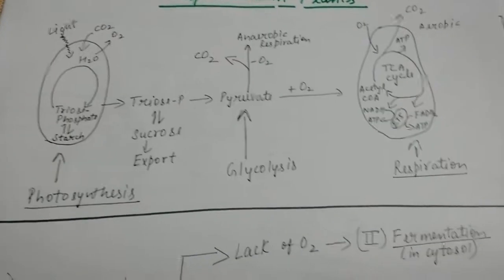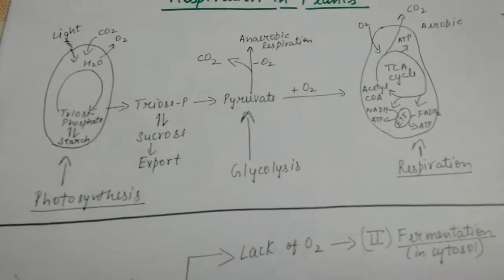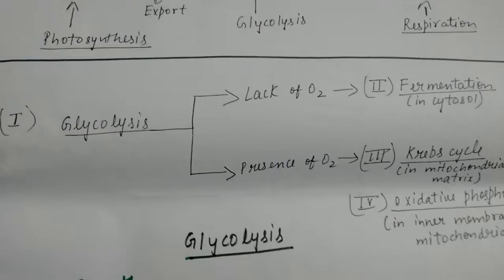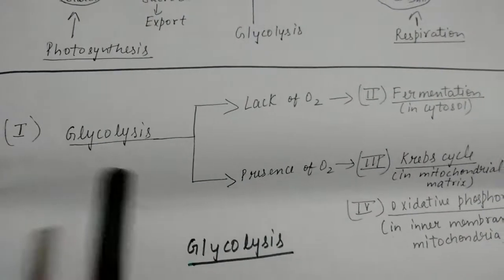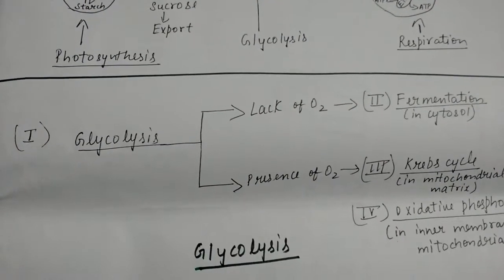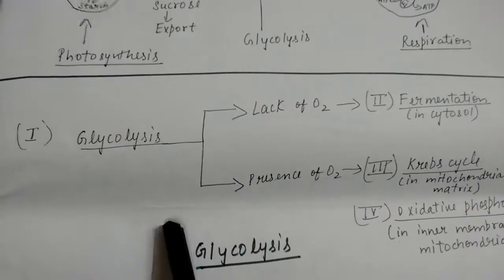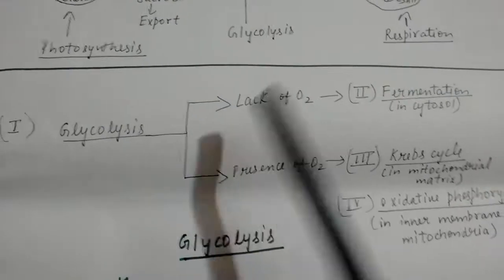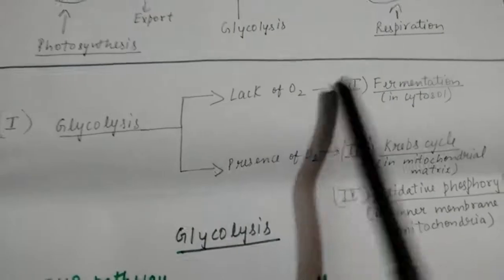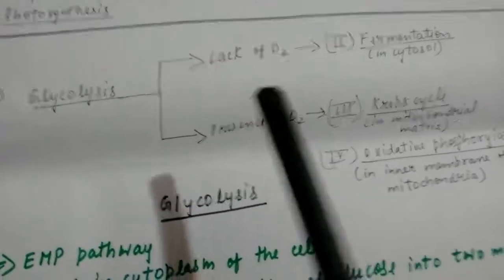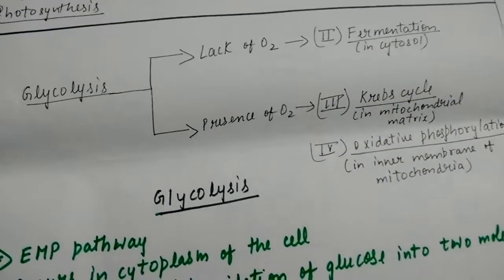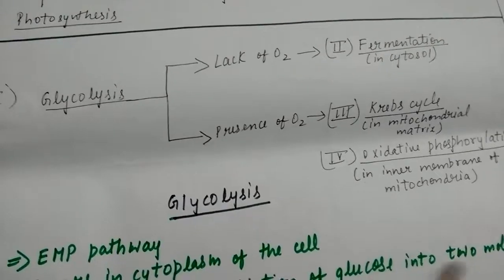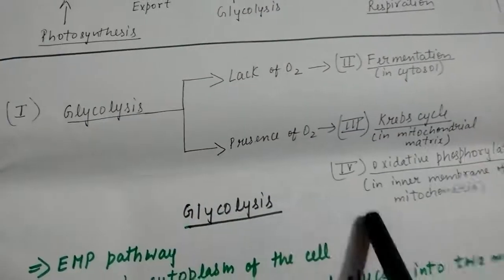That is the basic summary of how respiration occurs. The major phases of respiration are: first, glycolysis — where sucrose broken down into glucose is further broken down into two molecules of pyruvic acid. Then pyruvic acid is further broken down either in the absence of oxygen, which is called fermentation occurring in the cytosol, or in the presence of oxygen there are two phases: the Krebs cycle, which occurs in the mitochondrial matrix, and oxidative phosphorylation, which is the ETC located in the inner membrane of mitochondria.